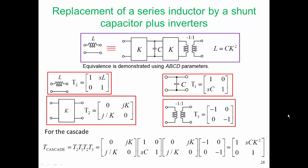For the cascade, we can multiply the T parameters together. So the T of the cascade is T2, T1, T2, T3. T2 is the ABCD matrix of our inverter. When we multiply it all out, we get this final expression here. This is very similar to the expression for the series inductor on its own. And it's identical if the value of the inductor is equal to c times k squared.